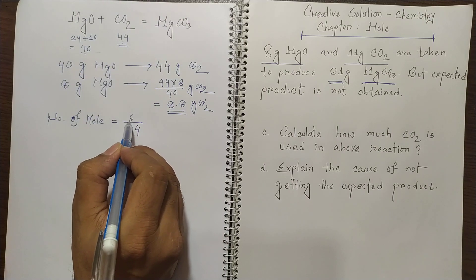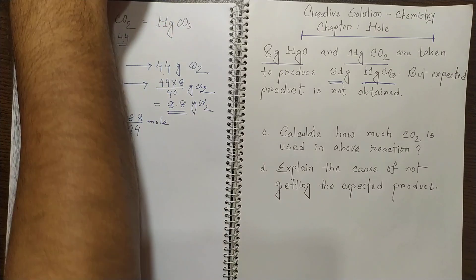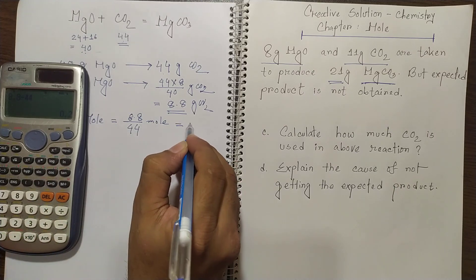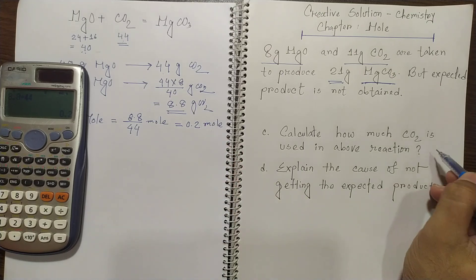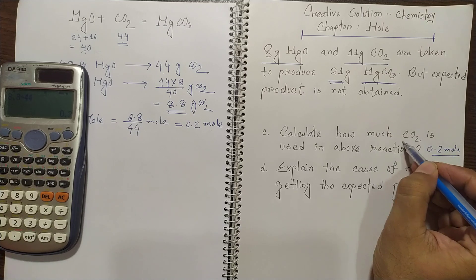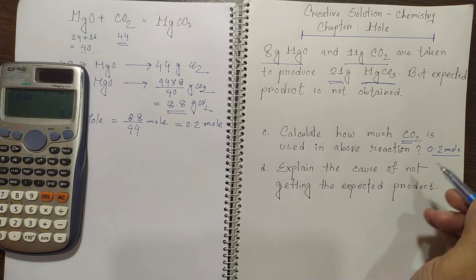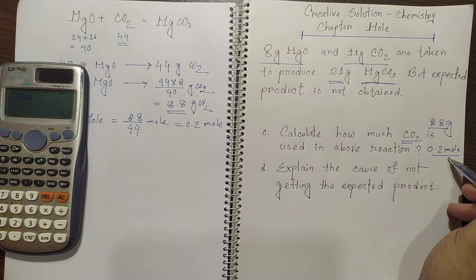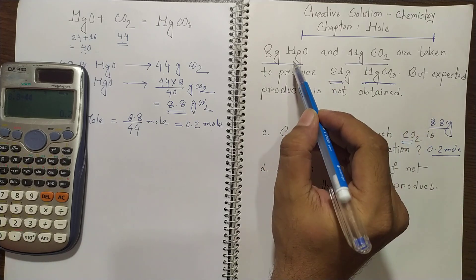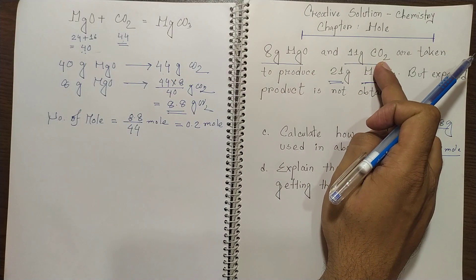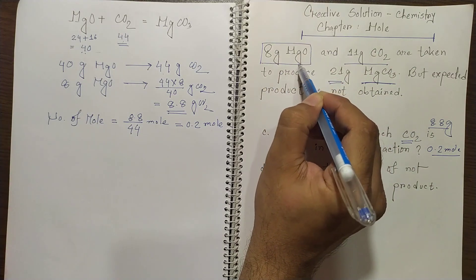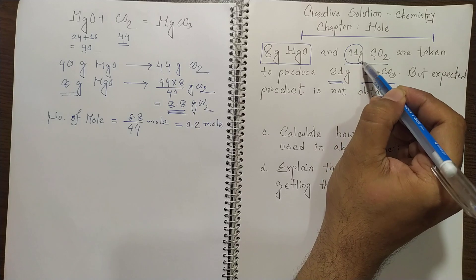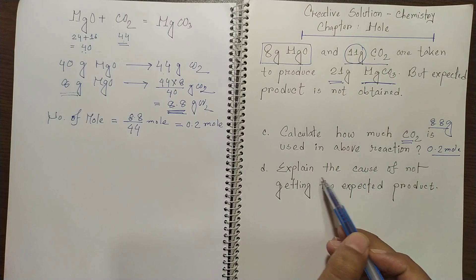Since 44 gram is one mole, the moles of CO₂ used = 8.8 / 44 = 0.2 mole. So we can say 0.2 mole, or equivalently 8.8 gram, of carbon dioxide was used in the reaction. Interestingly, we can also find that magnesium oxide is the limiting reactant, because 8 gram MgO reacts with only 8.8 gram CO₂, but 11 gram CO₂ is present.